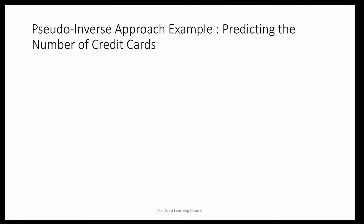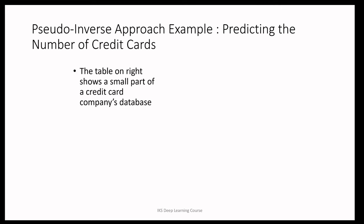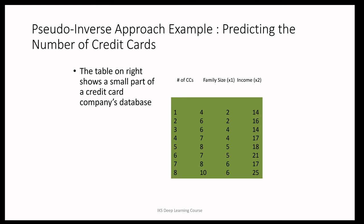Let's take a numeric example using the pseudo-inverse approach. We are going to predict the number of credit cards. The table shows a small part of a credit card database: the number of credit cards carried by a family, the size of the family (two, three, or five members), and the family income in multiples of tens of thousands of dollars.